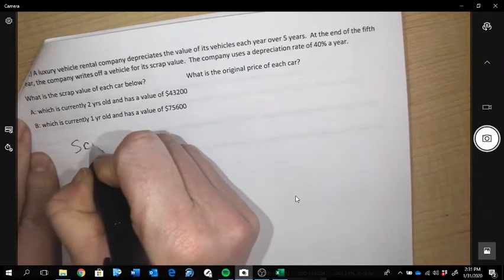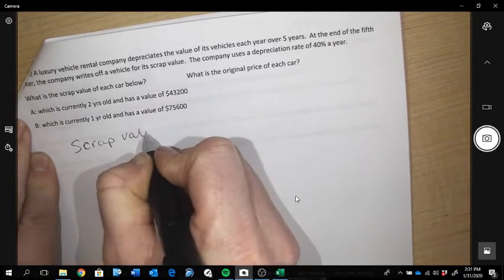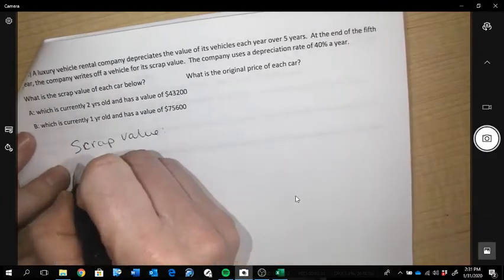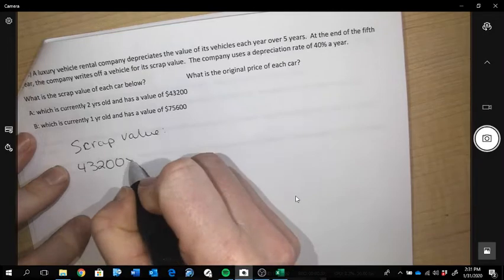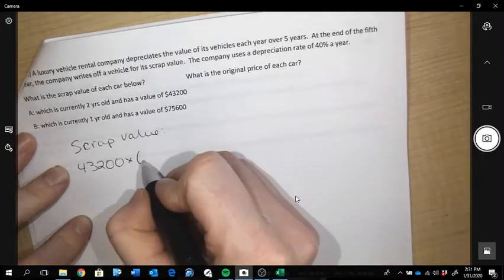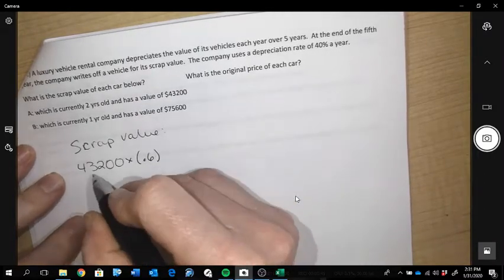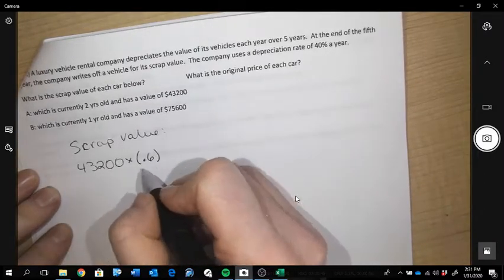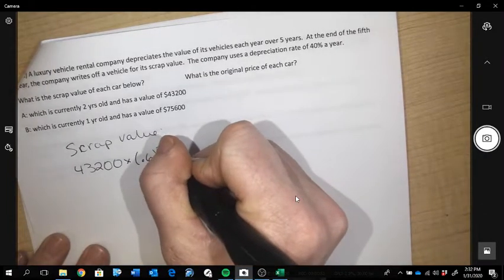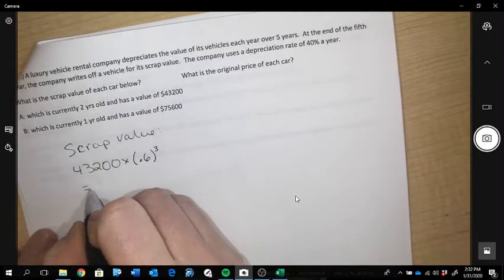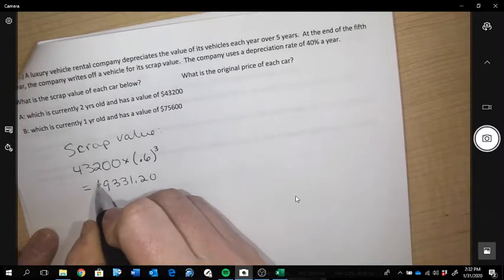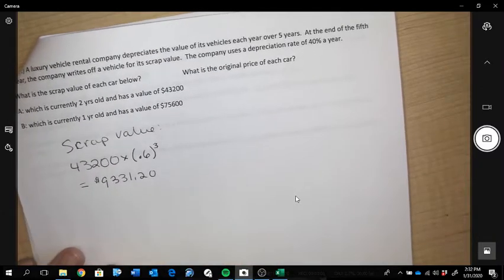A car is currently 2 years old and has a value of $43,200. It's going to go through 3 more years of depreciation, so the next year it's going to be worth 0.6 times what it is now, and then the next year 0.6 of that, and then 0.6 of that. So in three more years, that vehicle is only worth about $9,331.20.